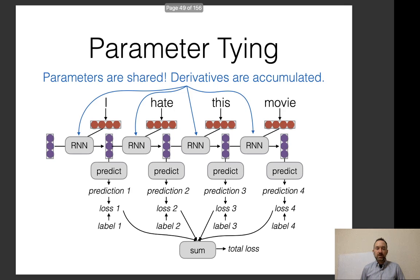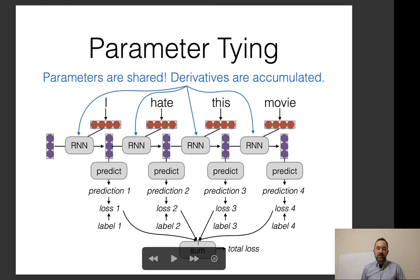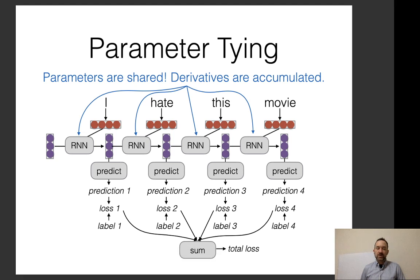Basically, the RNN performs identical calculations at every time step, which means all time steps share parameters. When we do backpropagation, it backprops from the total loss into each of the RNN parameters. This is also true for the prediction functions, which are typically shared across all time steps. So no matter how long the sequence is, we have a single set of parameters used for all time steps, which is convenient and makes learning easier.